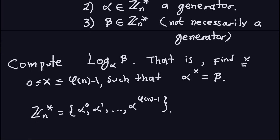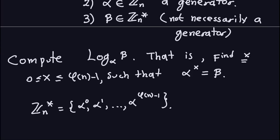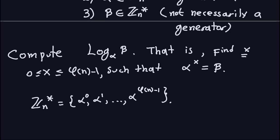The reason the exponent must be between 0 and φ(n) − 1 is because α is a generator, so α^0, α^1, and so on up to α^(φ(n)−1) cycle through all elements. The collection Z_n* consists of all integers relatively prime to n, and there are exactly φ(n) such elements, so the exponent range is 0 to φ(n) − 1.